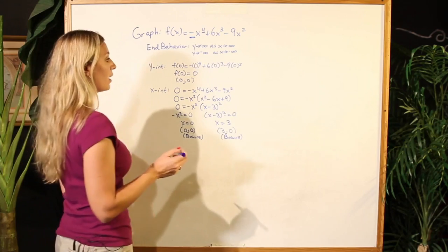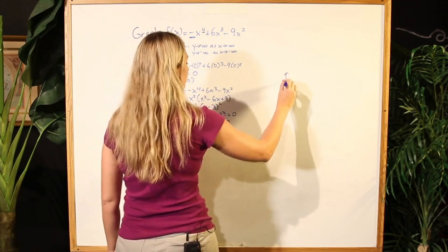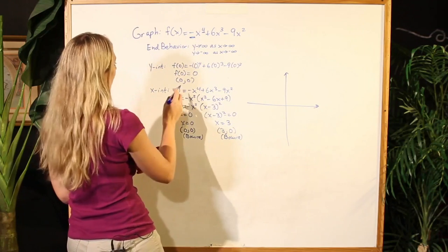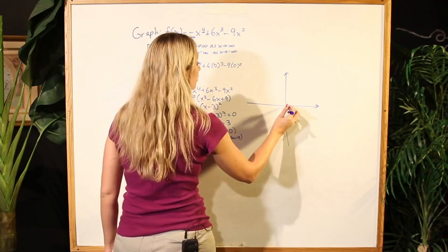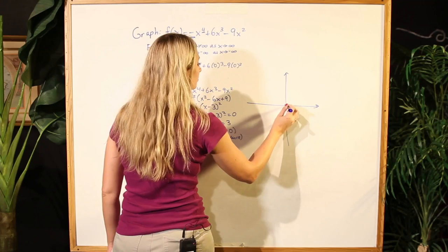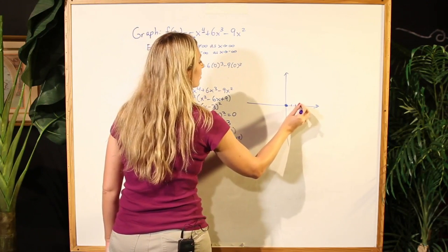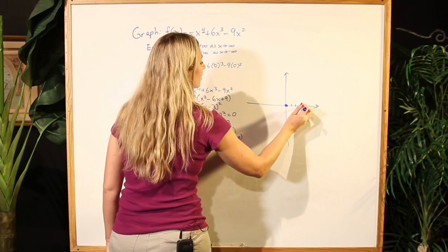Well, let's go ahead now and begin to construct our particular graph. We'll notice that we have a y-intercept and an x-intercept occurring at the origin, and our other intercept is occurring at (3, 0).